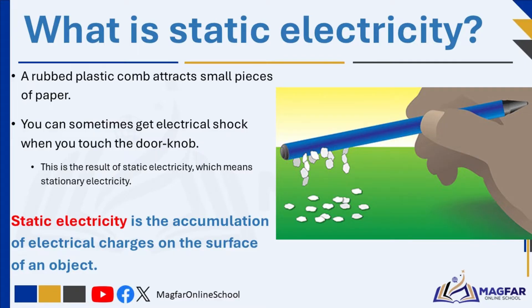Static electricity is the accumulation of electrical charges on the surface of an object. These electrical charges do not move in the same way as in an electrical circuit. The charges remain stationary until another object is touched. The electrical charge then flows to the other object and a spark can usually be seen or heard, as in the case when an electrical shock is felt when you touch a door handle.